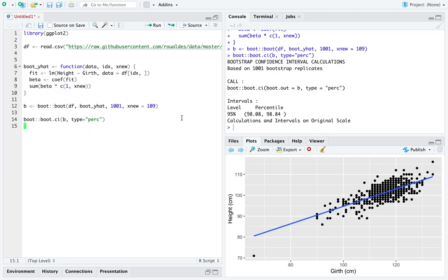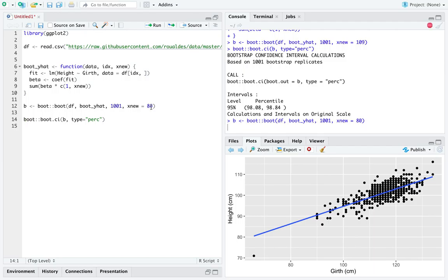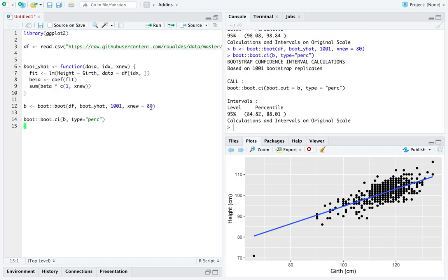The nice thing about this abstracted boot underscore y hat function is you could arbitrarily change this xnew value. And all the rest of it stays the same, so you don't end up in mistakes like I had before, where I forgot to re-declare the function.